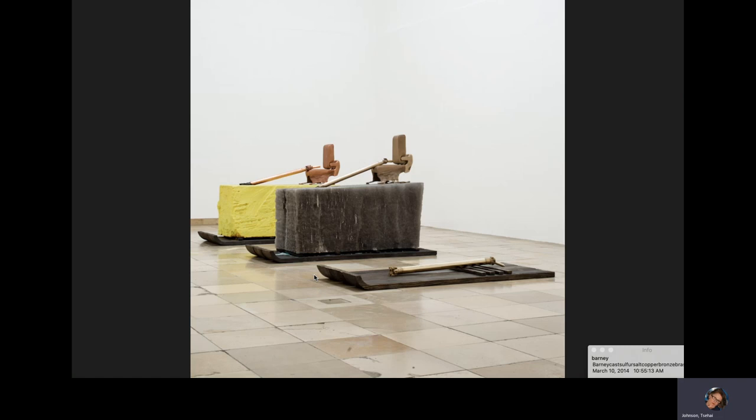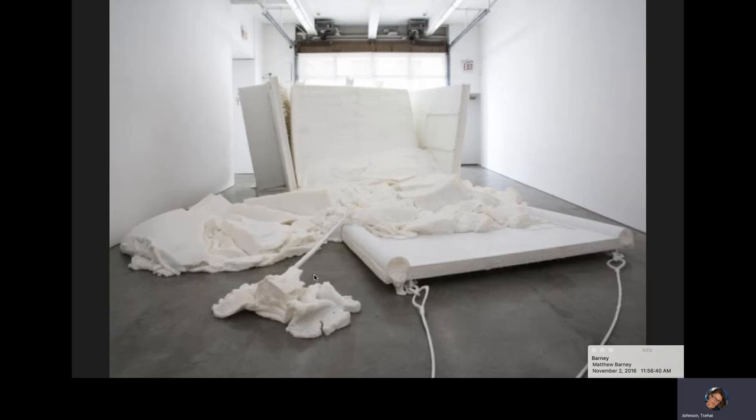This is a piece by Matthew Barney. He casts sulfur — that yellow piece in the background — and he casts salt, which is the charcoal rectangle in the middle ground. There are also parts cast out of copper and bronze and brass. He's known for experimenting and casting in a whole huge array of materials, and what those materials are has a very deep, profound impact on understanding what you're seeing.